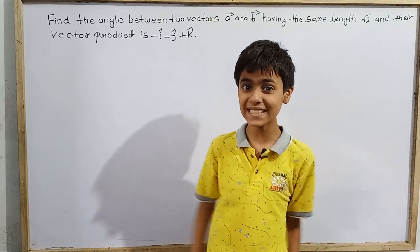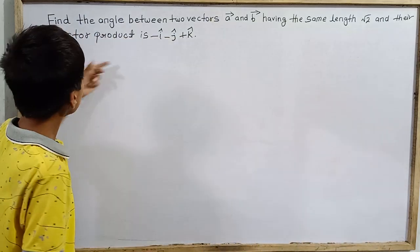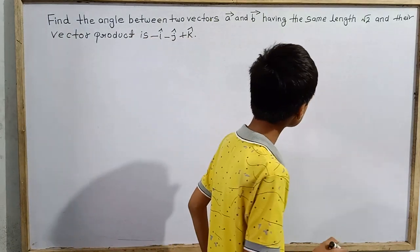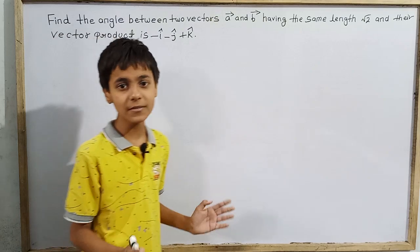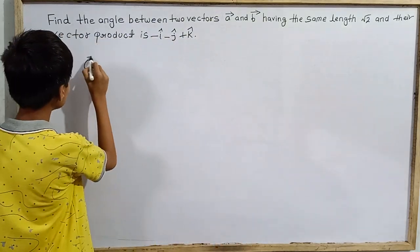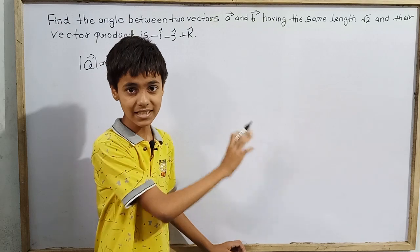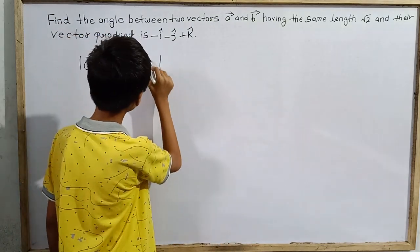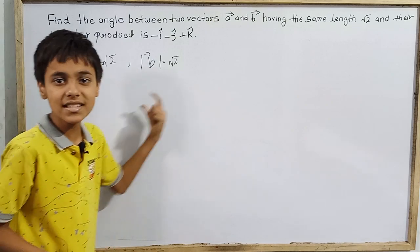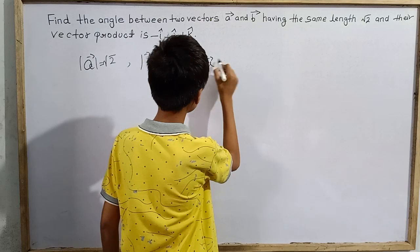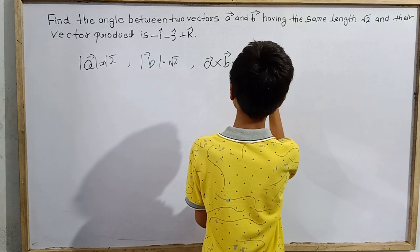Hello everyone, we are back with mathematics again. Today's question is: find the angle between two vectors, vector a and vector b, having the same length √2, and their vector product is -î - ĵ + k̂. We have been given two vectors: vector a has length √2 and vector b has length √2. We need to find the angle between them.